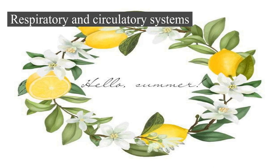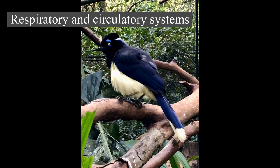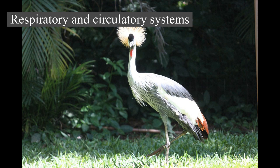Respiratory and circulatory systems. Birds have one of the most complex respiratory systems of all animal groups. Upon inhalation, 75% of the fresh air bypasses the lungs and flows directly into a posterior air sac which extends from the lungs and connects with air spaces in the bones. The other 25% of the air goes directly into the lungs. When the bird exhales, the used air flows out of the lungs and the stored fresh air from the posterior air sac is simultaneously forced into the lungs. Thus, a bird's lungs receive a constant supply of fresh air during both inhalation and exhalation. Sound production is achieved using the syrinx, a muscular chamber incorporating multiple tympanic membranes which diverges from the lower end of the trachea, the trachea being elongated in some species.